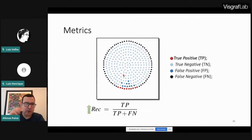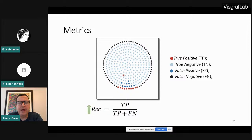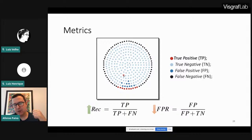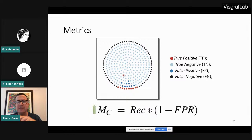We use two metrics: recall, which measures the true positive rate, and false positive rate. Using only recall is insufficient — a method that marks everyone as boundary would get perfect recall. So we combine both: the combined metric is recall times (1 minus the false positive rate), ranging from 0 to 1 where 1 is the best. Our method by design always chooses to mark uncertain particles as boundary, guaranteeing recall equals 1 (no false negatives), so we minimize false positives.